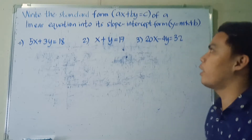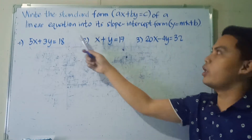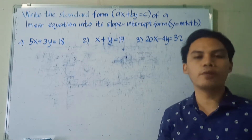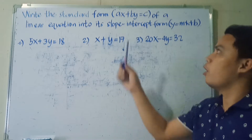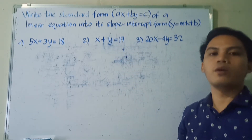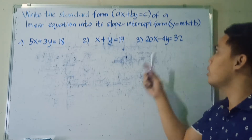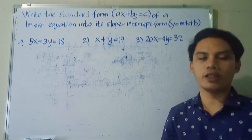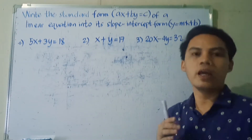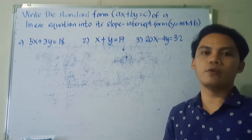First, we'll work on changing the standard form of a linear equation into its slope-intercept form. As we all know, the standard form of a linear equation is AX plus BY is equal to C, while the slope-intercept form of a linear equation is Y is equal to MX plus B. Our given equations are written in standard form, and we will transform them into slope-intercept form.